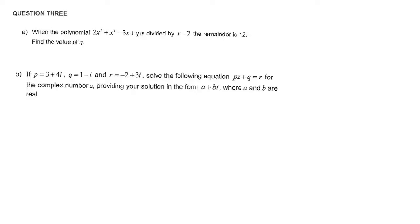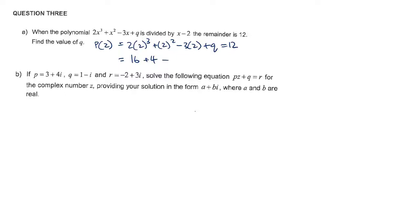Question 3: a polynomial divided by (x minus 2) gives a remainder of 12. The easiest approach is the remainder theorem — dividing by x minus 2 is the same as evaluating the polynomial at x equals 2. So: 2 cubed plus 2 squared minus 3 lots of 2 plus q equals 12. That's 8 plus 4 minus 6 plus q equals 12, so 6 plus q equals 12, giving q equals negative 2.